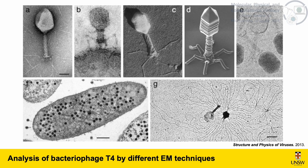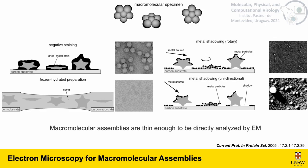Here we have the analysis of bacteriophage T4 by different EM techniques, ranging from negative staining in A, ultra-thin sections with different levels in B and F, metal shadowing in C, a simulation of how bacteriophage T4 would look in scanning electron microscopy in D, and cryo-electron microscopy in E. The more typical techniques for analysis of macromolecular complexes by transmission electron microscopy are negative staining, metal shadowing, and cryo-EM. Negative staining and cryo-EM are the ones typically used for viral capsids, while metal shadowing is typically only used for the analysis of nucleic acids.